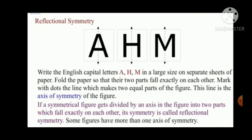If a symmetrical figure gets divided by an axis in the figure into two parts which fall exactly on each other, its symmetry is called Reflectional Symmetry. Now you all can see letters A, H, M. If written on a paper and if they are folded, they are exactly fitting on each other. These figures are called Reflectional Symmetry. Some figures have more than one axis of symmetry.